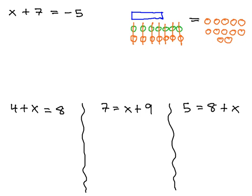When we do that, we see this unknown x strip is balancing with 1, 2, 3, 4, 5, 6, 7, 8, 9, 10, 11, 12 negatives. This means x, this x strip, must be equal to negative 12.